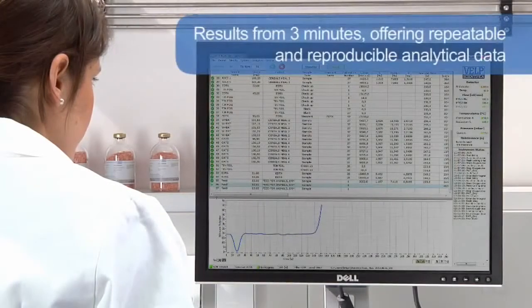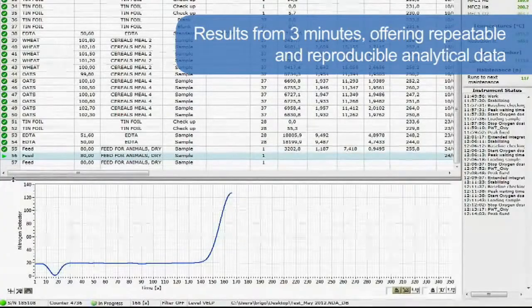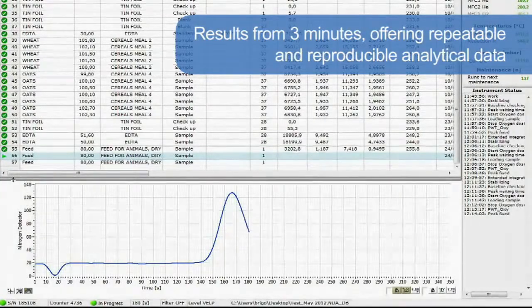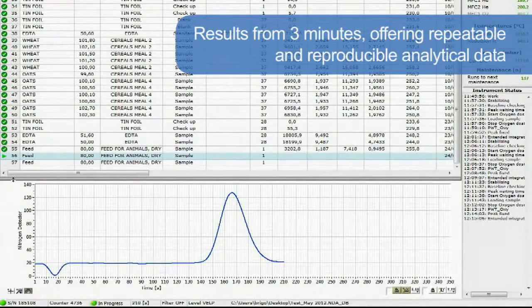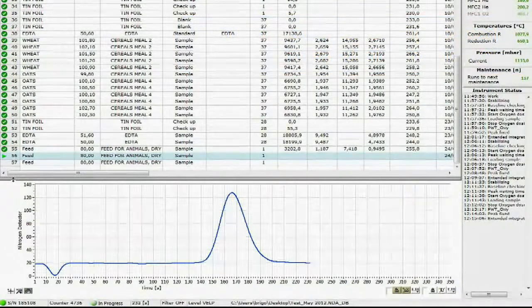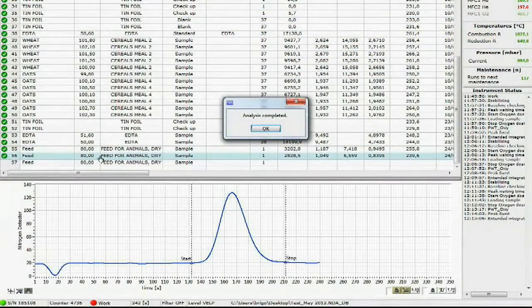The analysis time starts from 3 minutes, offering repeatable and reproducible analytical results on several types of samples with no matrix effect in the determination of nitrogen. To increase the precision and accuracy, all the gases are tested.